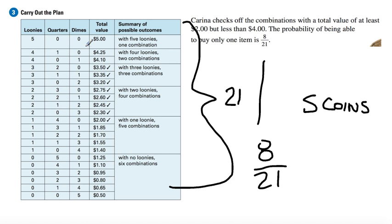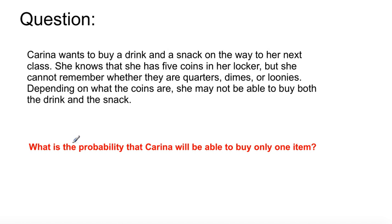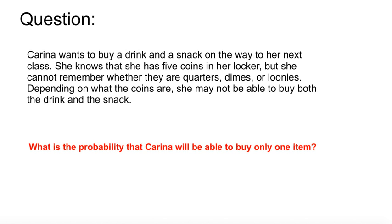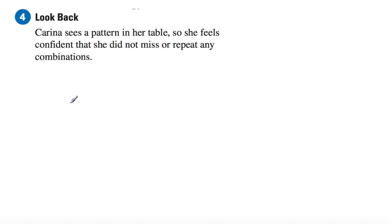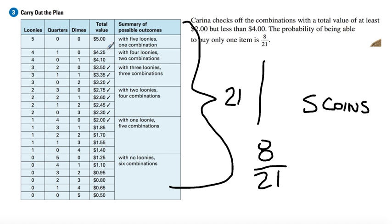Okay, so of everything, her favorable response would be between $3.50 and $2.00. She only has five coins and these are all the possible combinations. All right, so this is what we're looking for. We go back to the question, review again: what is the probability that Carina will be able to buy only one item? So the probability of only being able to buy one item is 8 out of 21.